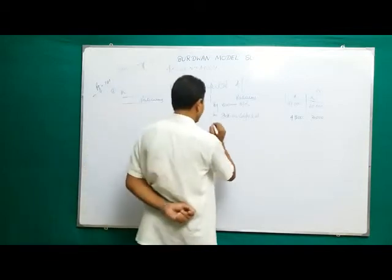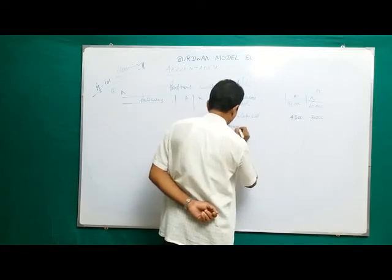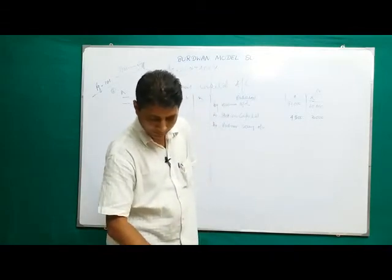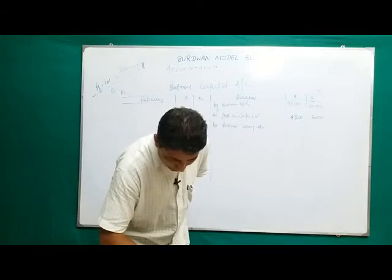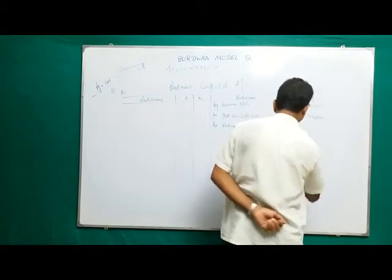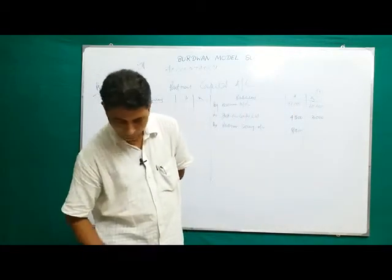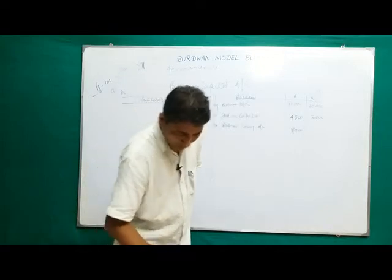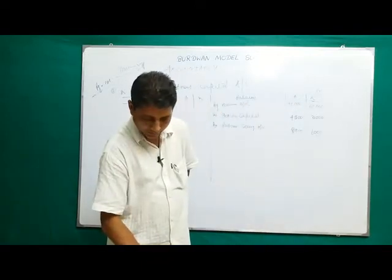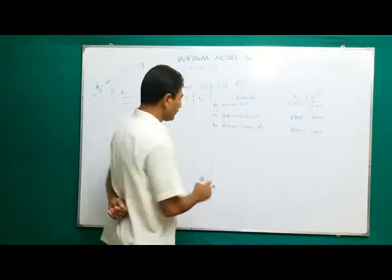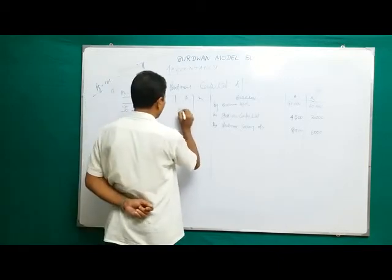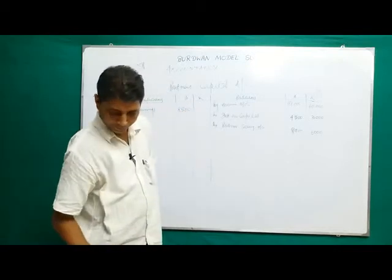Next entry: 'By Partner Salary Account.' Onuba's salary is 700 per month into 12 equals 8,400. Kajol's salary is 500 per month into 12 equals 6,000. Next on the debit side: drawings — Onuba 8,500 and Kajol 6,500.